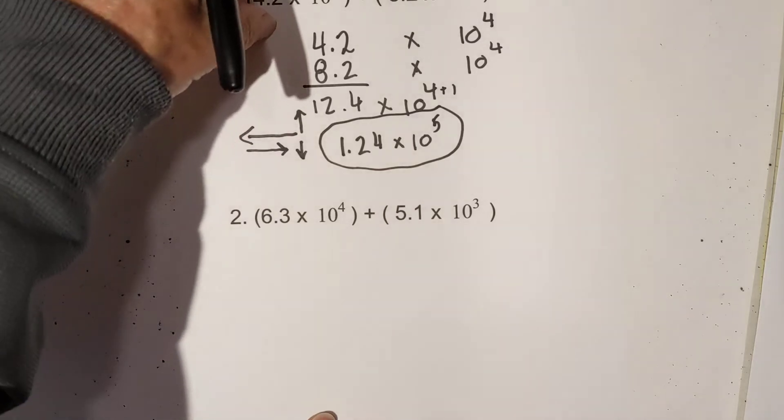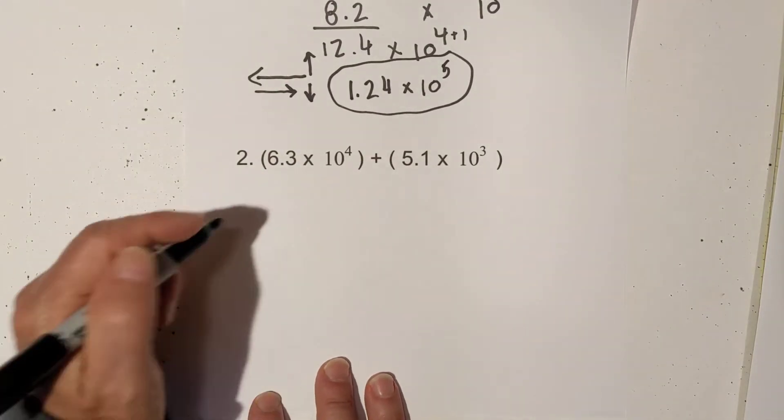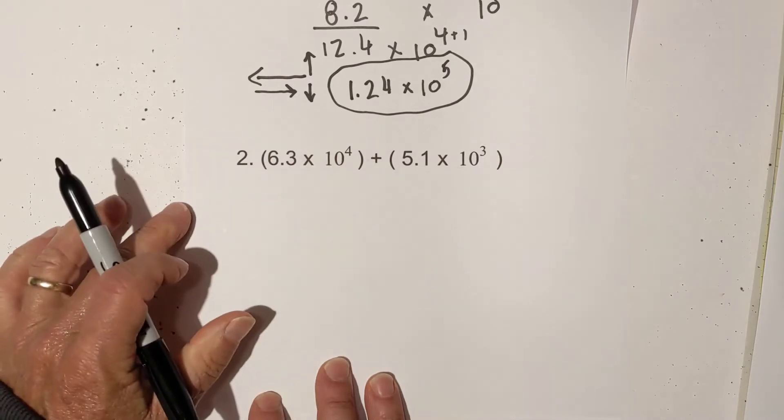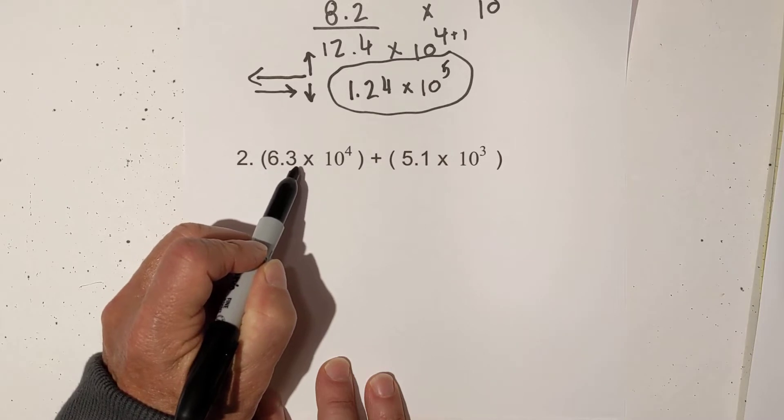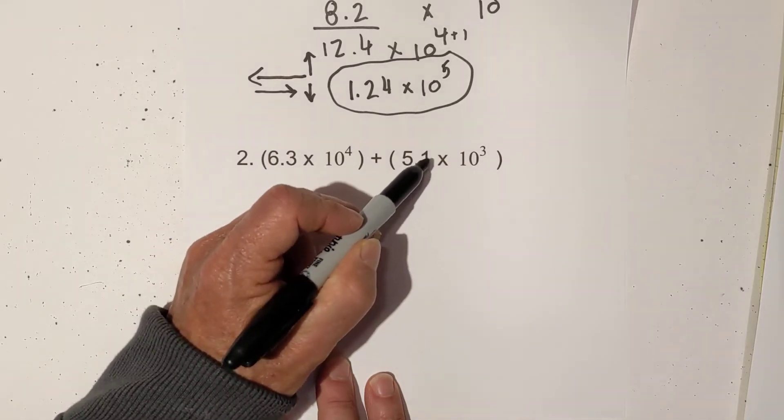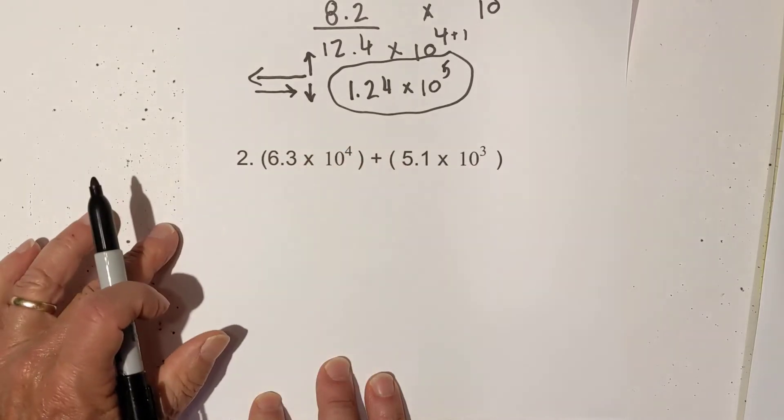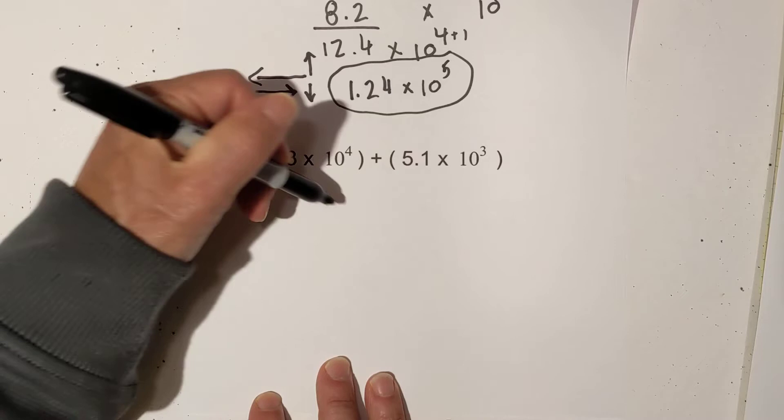Now let's work this next one. You notice that the exponents are not the same. So what I can do is either this number can get larger and I can subtract 1 from the 4, or this number can get smaller and I can add 1. So what I think I'll do is get 5.1 a little bit smaller.